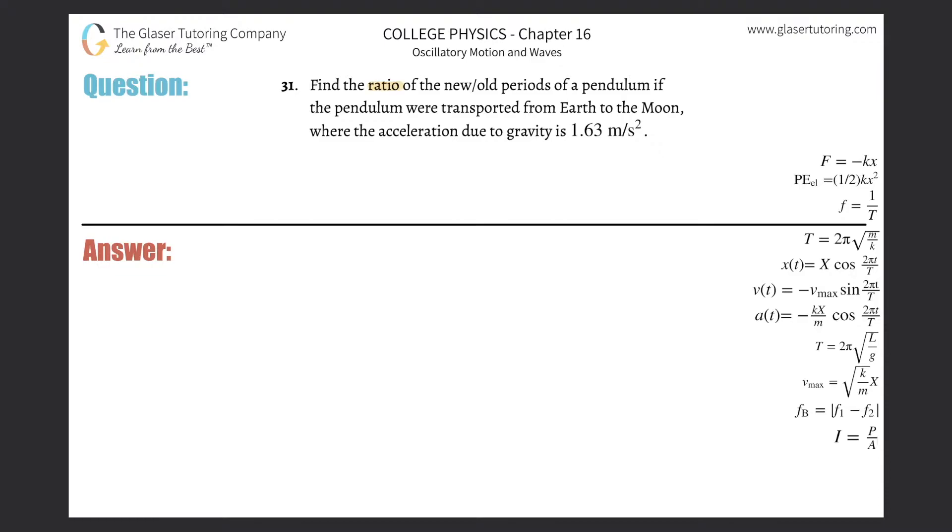Number 31. Find the ratio of the new to old periods of a pendulum if the pendulum were transported from Earth to the Moon, where the acceleration due to gravity is 1.63 meters per second squared.